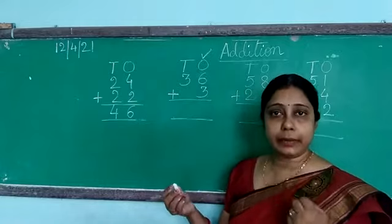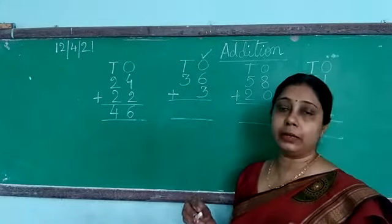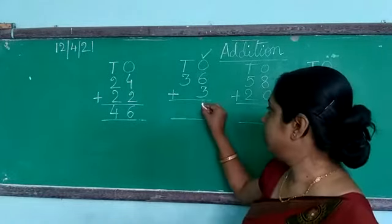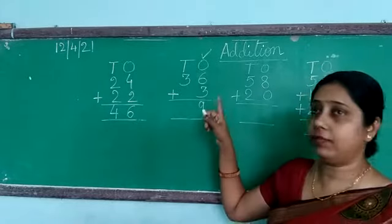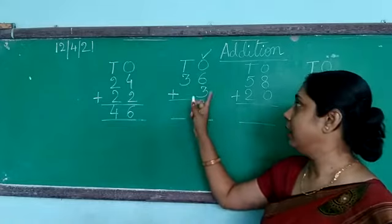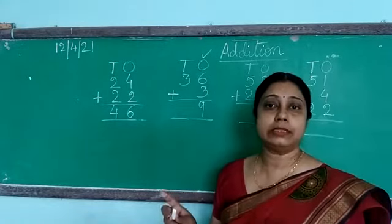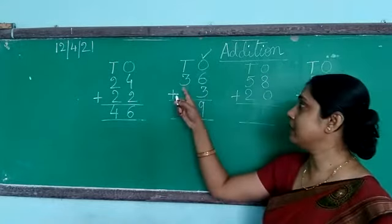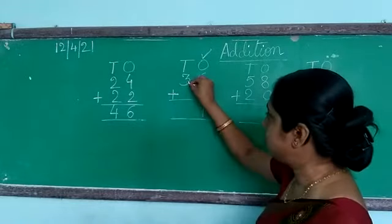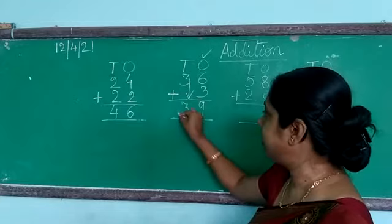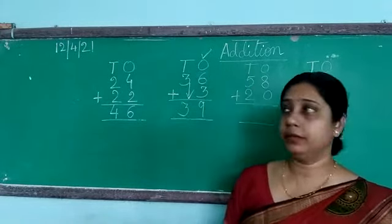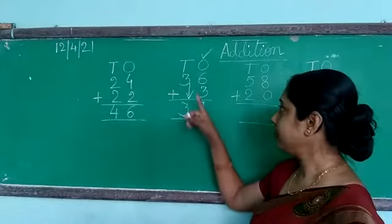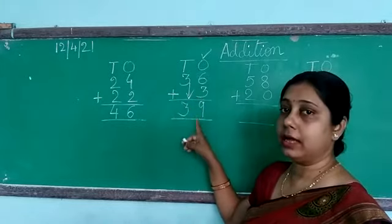Generally what we do is take the bigger number and then count on the lesser number. So from 6 we count 3 more: 7, 8, 9. We have already learnt in the properties of addition that changing the order of the numbers does not change the sum. So 6 plus 3 is 9. In the tens place nothing is there, so the 3 comes straight down. The answer is 39.